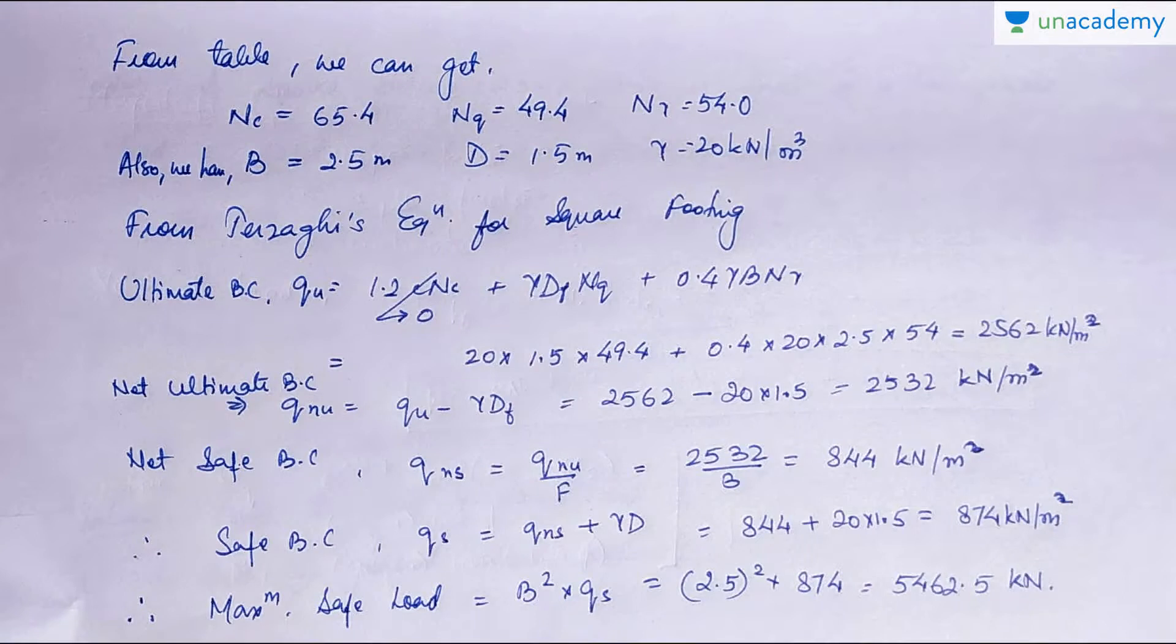Safe bearing capacity QS is found by adding the overburden pressure. Adding 20 x 1.5, you get 874 kN/m². Therefore, the maximum safe load that the soil can carry is B² x Q safe. Put the values: 2.5² x 874 equals 5462 kN.